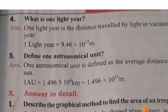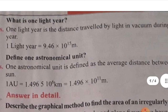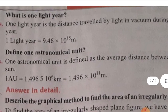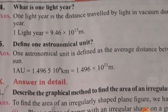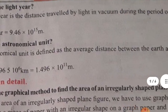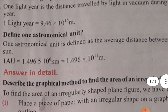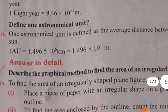Fourth important brief answer: what is one light year? One light year is the distance traveled by light in vacuum during the period of one year. One light year equals 9.46 × 10 power 15 meters. Fifth: define one astronomical unit. One astronomical unit is defined as the average distance between the Earth and the Sun. One AU = 1.496 × 10 power 11 meters.